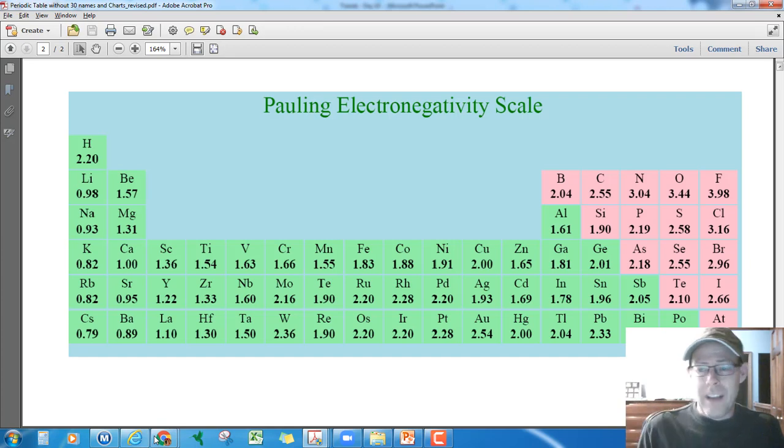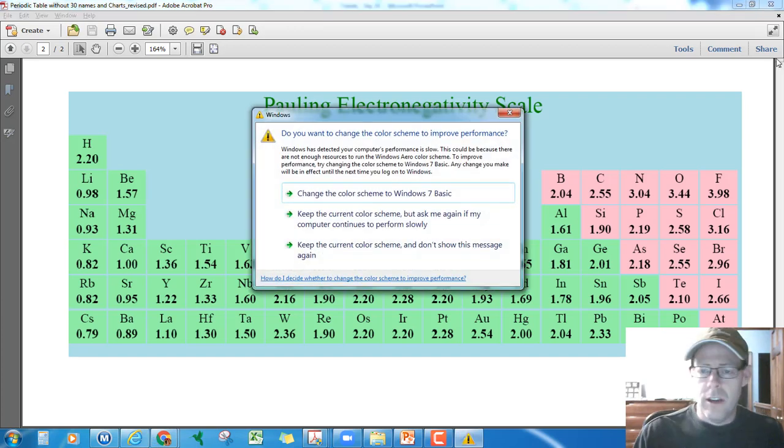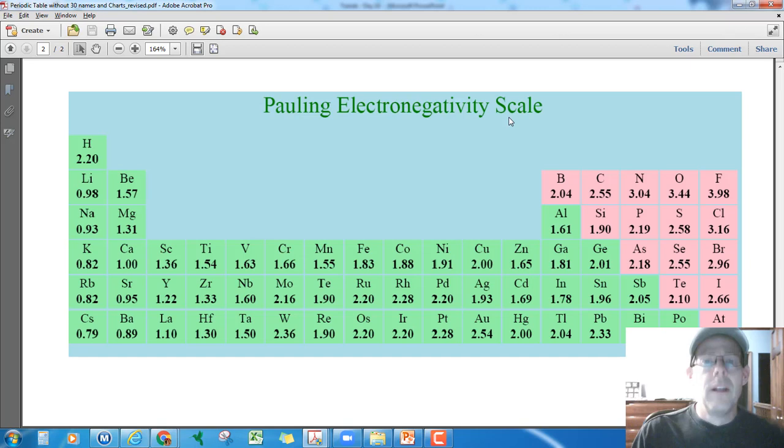Notice, fluorine is top right. It has the largest. And if we had francium on here, it's not there, it would be below cesium, it would be the smallest. So the electronegativity scale exactly matches ionization energy. Exactly matches ionization energy, or it's exactly opposite size again. Electronegativity is the same as ionization energy and it's opposite size. But we're going to use these values next units, possibly even next week. And they become important for bonding.